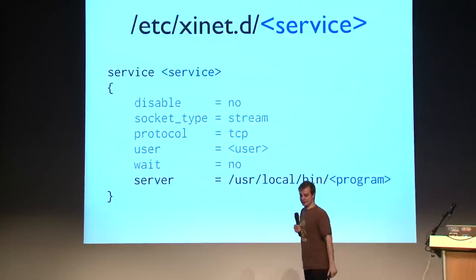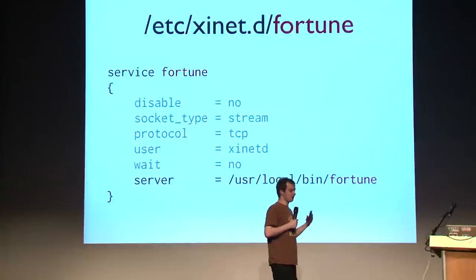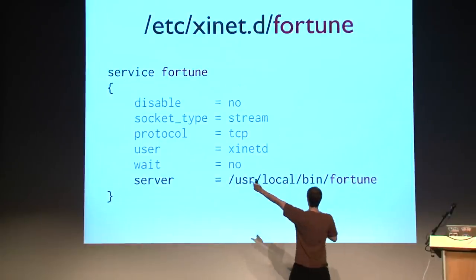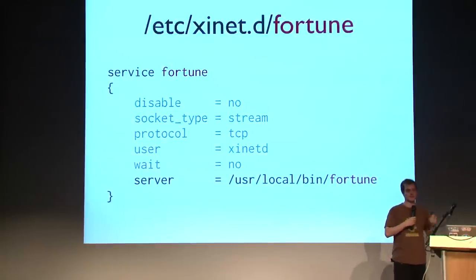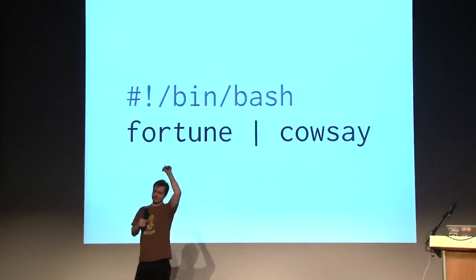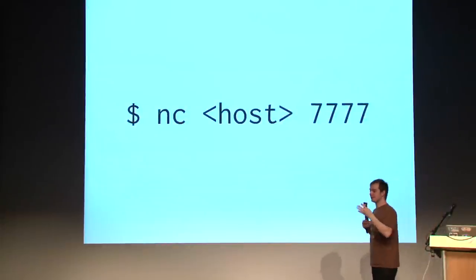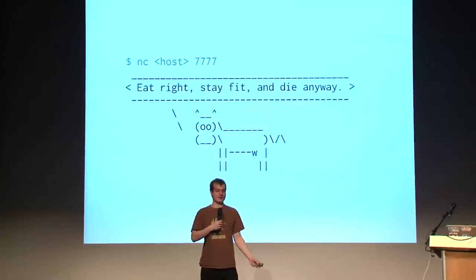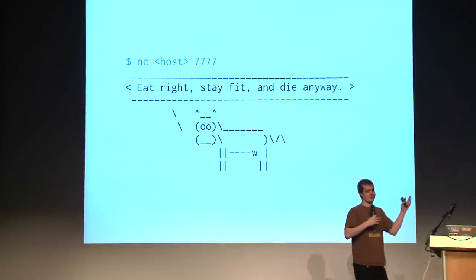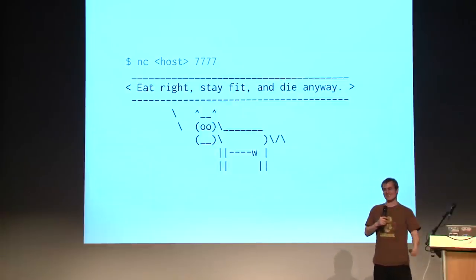Let's make a fortune command that produces a random fortune cookie message. We configure it in iNetD pointing to a bash script at /usr/local/bin/fortune. The script calls the fortune command and pipes it through cowsay to look nicer. When you connect from a different machine, you get something like 'Eat right, stay fit, and die anyway' displayed in a nice ASCII cow. That's what cowsay does — it takes any string and wraps it in an ASCII cow, and you can customize it.